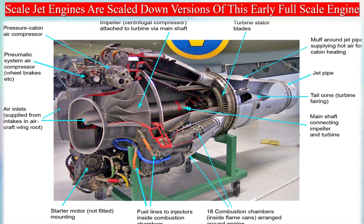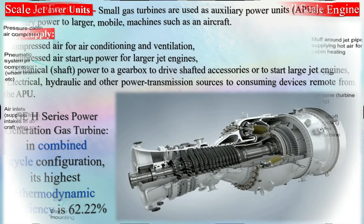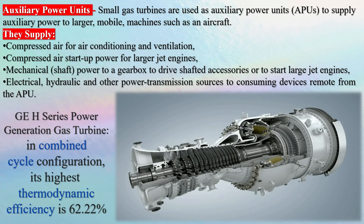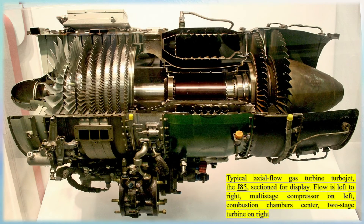Advantages of gas turbine engines include: very high power-to-weight ratio compared to reciprocating engines; smaller size than most reciprocating engines of the same power rating; smooth rotation producing far less vibration; fewer moving parts resulting in lower maintenance cost and higher reliability; greater reliability particularly where sustained high power output is required; and waste heat dissipated almost entirely in the exhaust, producing a high-temperature exhaust stream very usable for boiling water in a combined cycle or for cogeneration.